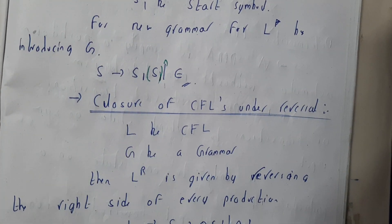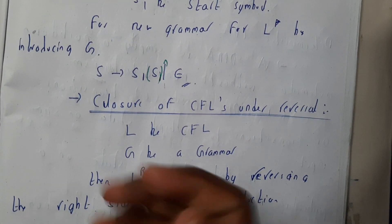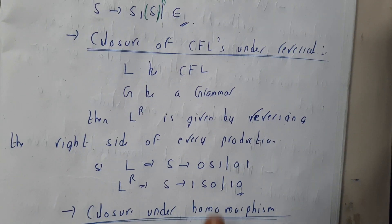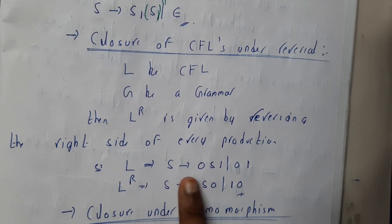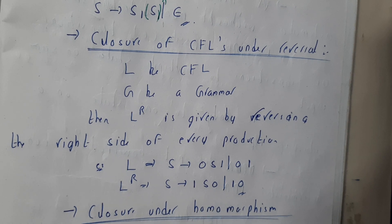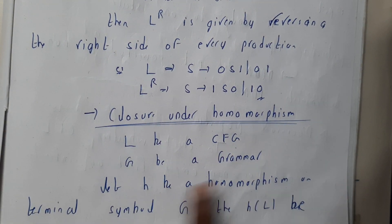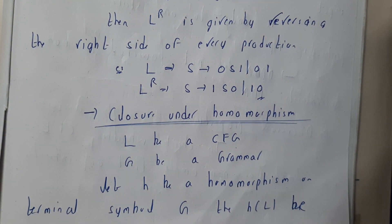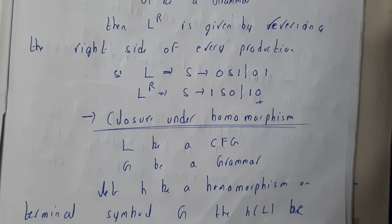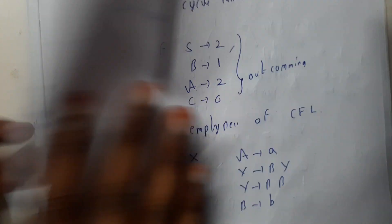Closure under reversal: reversal means if 'ab' is there it will become 'ba'. For example, 0s1 becomes 1s0. CFLs are closed under reversal.